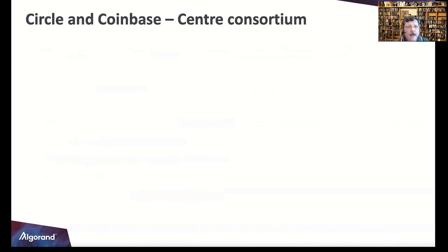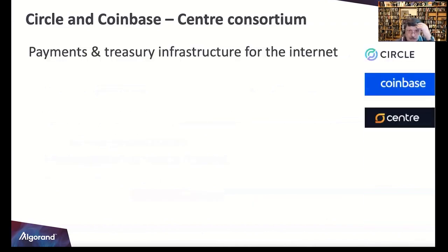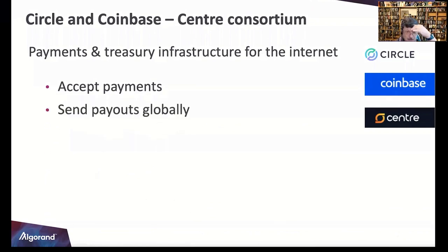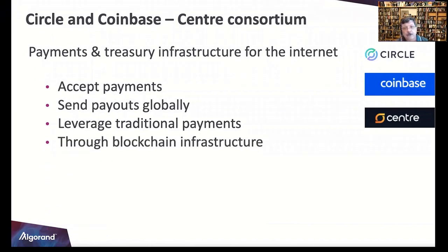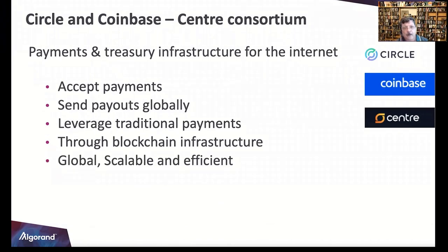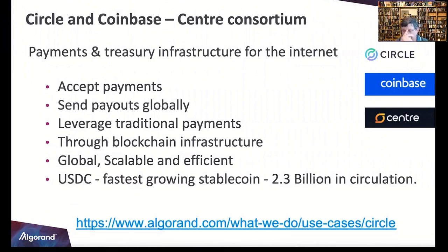Next is Circle and Coinbase — a central consortium for payments and treasury infrastructure for the internet. They accept payments both in the traditional fashion — Mastercard, Visa, and all that — but also through crypto and blockchain infrastructure. All transactions are very global, scalable, and efficient. USDC is the fastest growing stable coin.